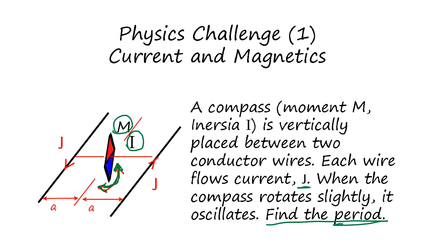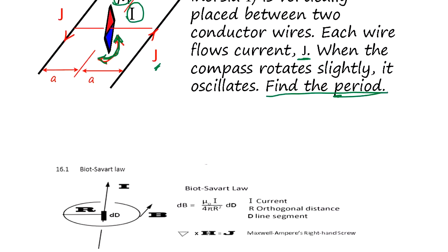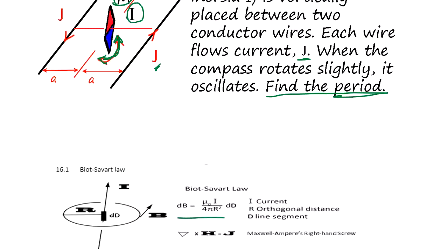The question is: find the period of the oscillation. First, we need to know how much magnetic field is generated by the current J. We use the Biot-Savart law, which comes from Maxwell's third and fourth equations.